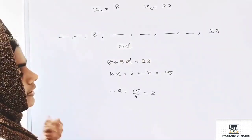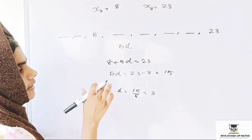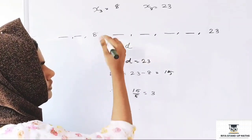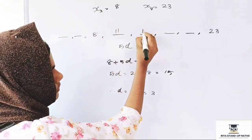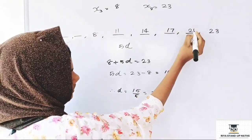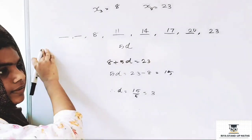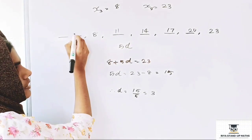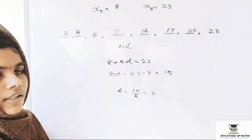The common difference is 3. Now the sequence is: 8 plus 3 equals 11, 11 plus 3 equals 14, 14 plus 3 equals 17, 17 plus 3 equals 20, 20 plus 3 equals 23. So the sequence is complete.